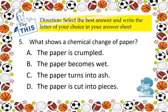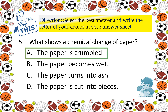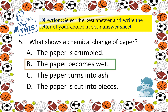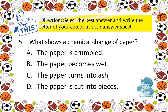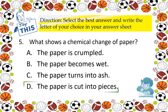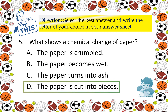Number 5: What shows a chemical change of paper? A. The paper is crumpled, B. The paper becomes wet, C. The paper turns into ash, D. The paper is cut into pieces.